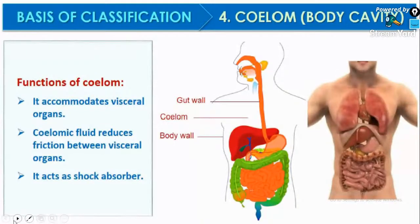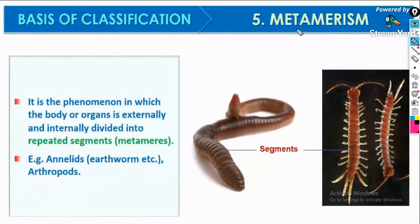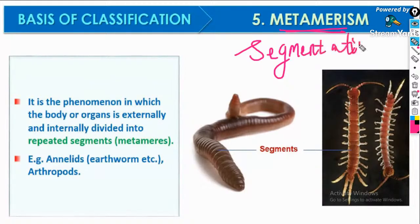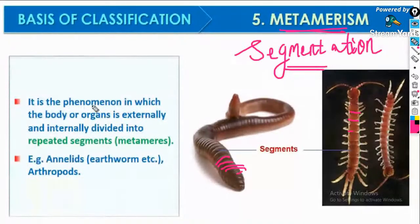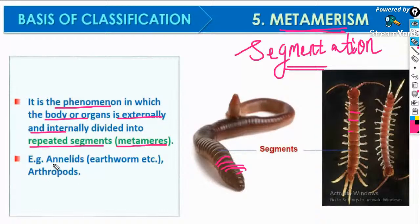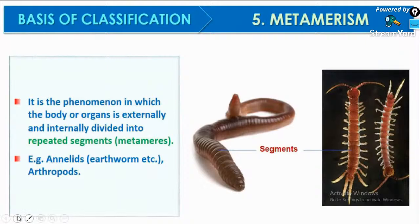Fifth basis is metamerism or segmentation. Metamerism is a phenomenon in which the body or organ is externally and internally divided into repeated segments called metameres. Examples include Annelida and Arthropoda. In earthworms, the body is clearly externally and internally segmented. The diagram shows centipede and millipede along with earthworm as examples of metameric segmentation.